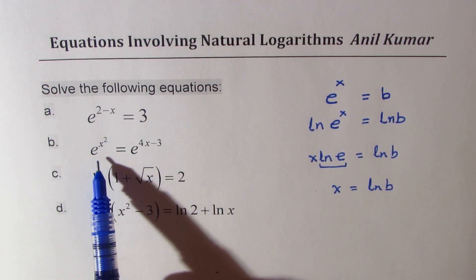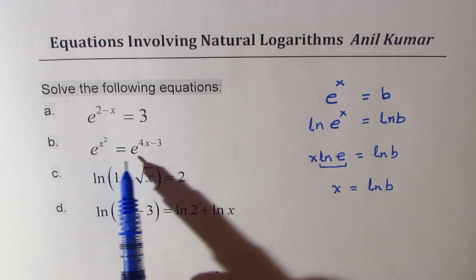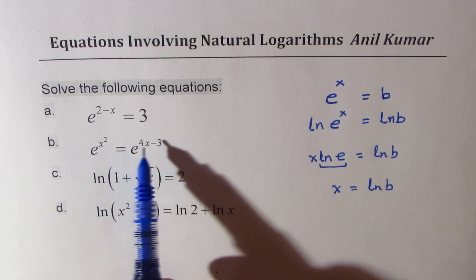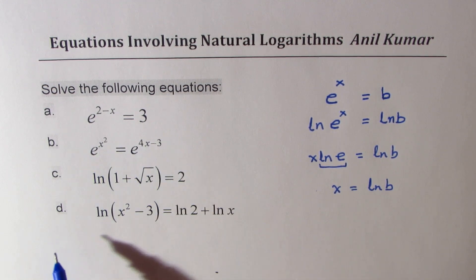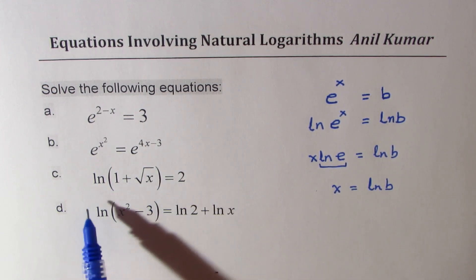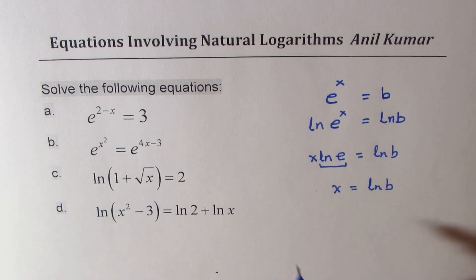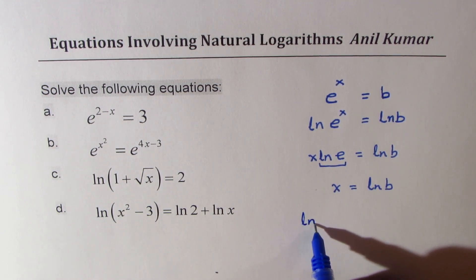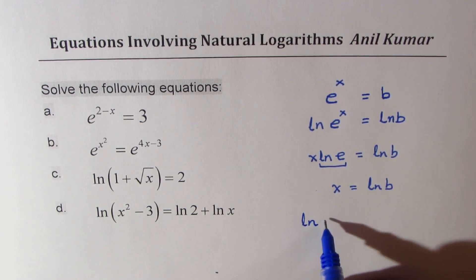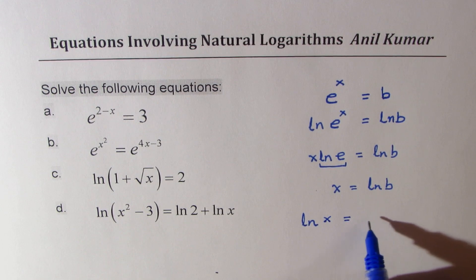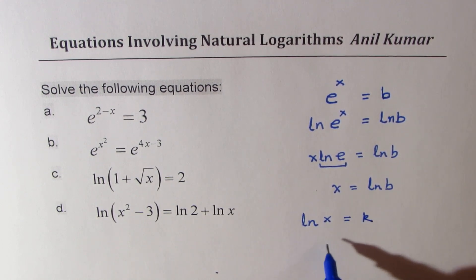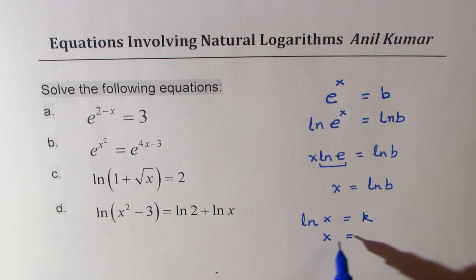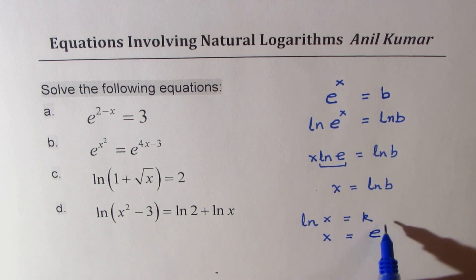For the second equation, both bases are the same, so we equate the exponents. For the third equation, if ln(x) equals some constant k, then x equals e to the power of k.